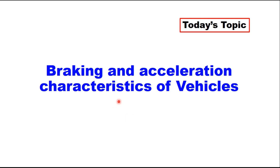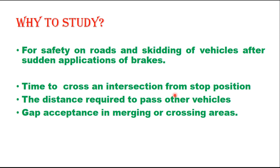Hello friends, today in this session we will discuss braking and acceleration characteristics of vehicles, which are part of the dynamic characteristics of vehicles. Braking and acceleration are very common while driving on a road. Braking is required when stopping at intersections, slowing down near a speed breaker, near a pedestrian crossing, or negotiating a horizontal curve. Acceleration is required to start a vehicle from a stop position or during overtaking operations.